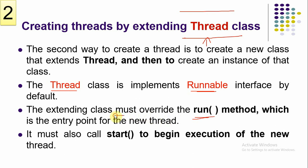We must override the run() method to write our own task. The run() method is the entry point for the new thread. Once done, we create an object for that class and call the start() method, which moves the thread from the new state to the runnable state.